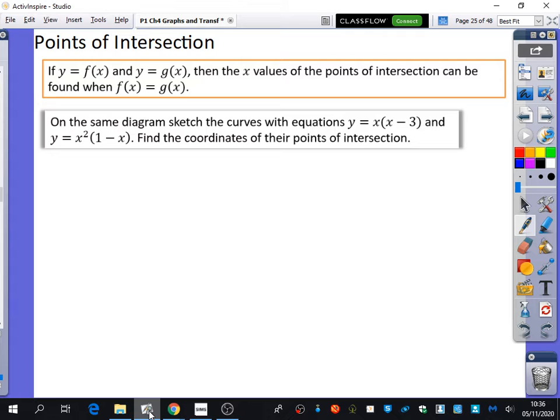If y is a function of x and y is another function of x, then the x values of the points of intersection can be found when f(x) equals g(x). That sounds kind of confusing, but all it's really saying is where two lines intersect, it's where the graphs intersect each other, and it's where you can solve their equations. It's simultaneous equations.